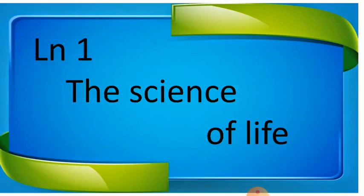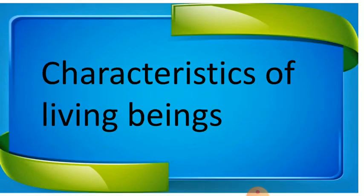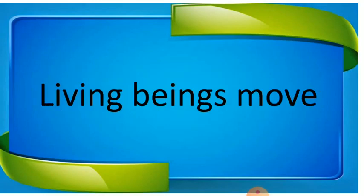Yes children, we'll get started. This is lesson number one: The Science of Life. We started the lesson with characteristics of living beings. We already learned six characteristics, and now we are going to discuss the three remaining ones. As we learned: living beings can grow, living beings can respond to stimuli, living beings move, and living beings are made up of cells.